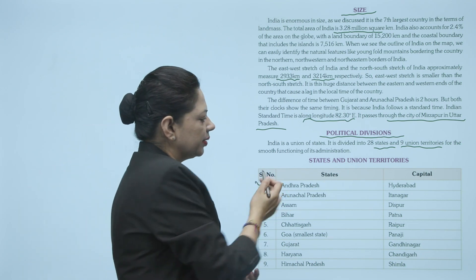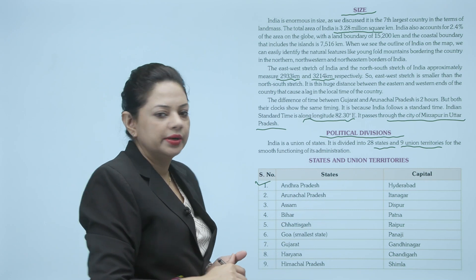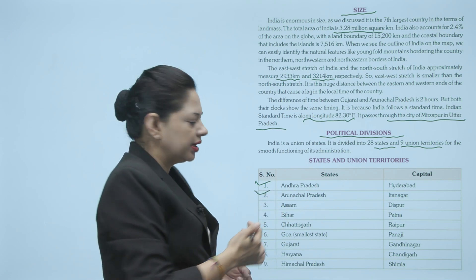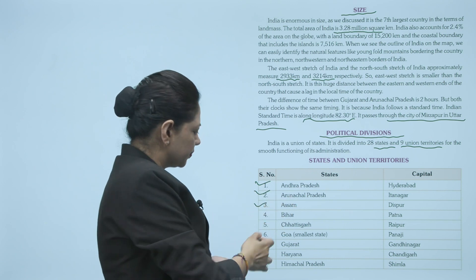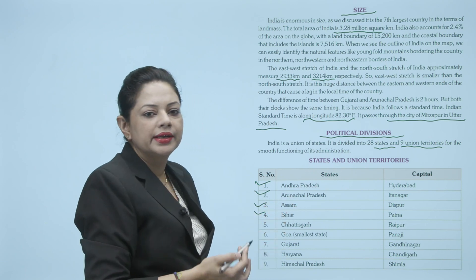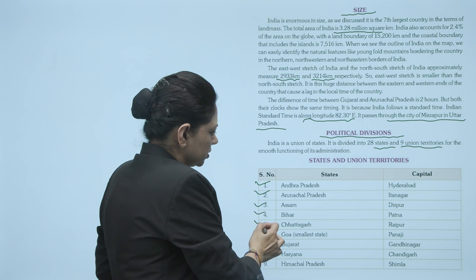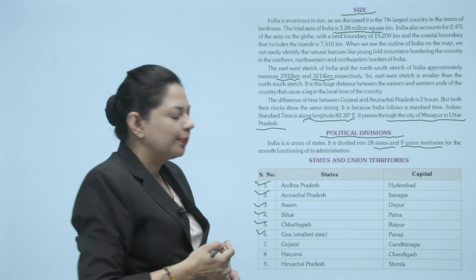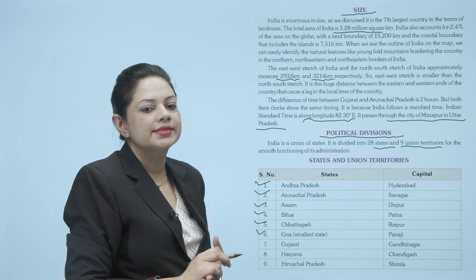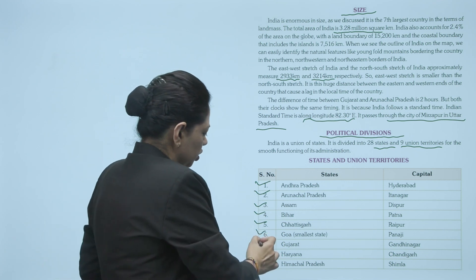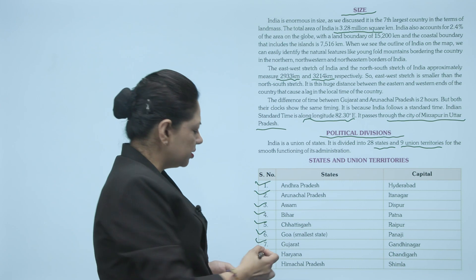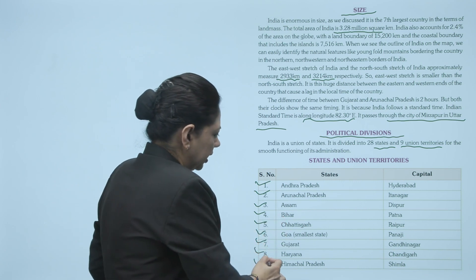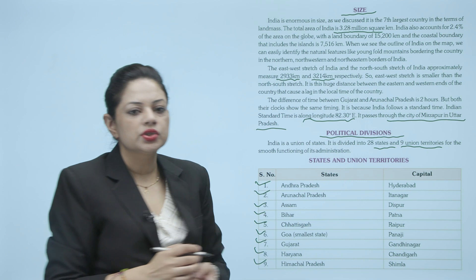Come to the states and their capitals. Andhra Pradesh — Hyderabad. Arunachal Pradesh — Itanagar. Assam — Dispur. Bihar — Patna. Chhattisgarh — Raipur. Goa — Panaji. Goa is the smallest state of India. Gujarat — Gandhinagar. Haryana — Chandigarh. Himachal Pradesh — Shimla.